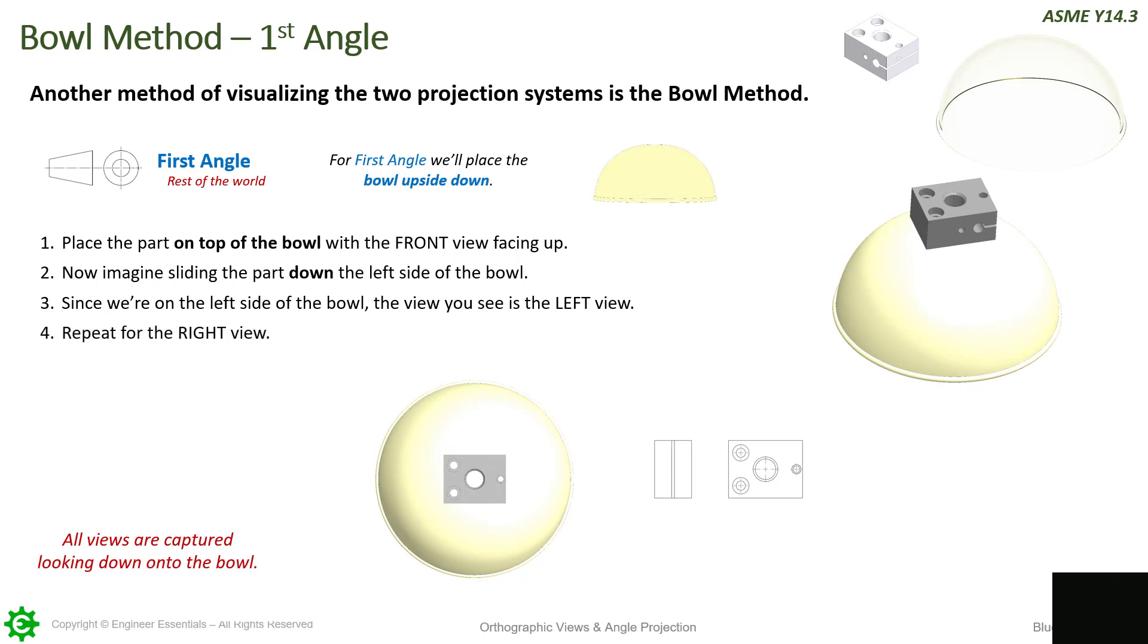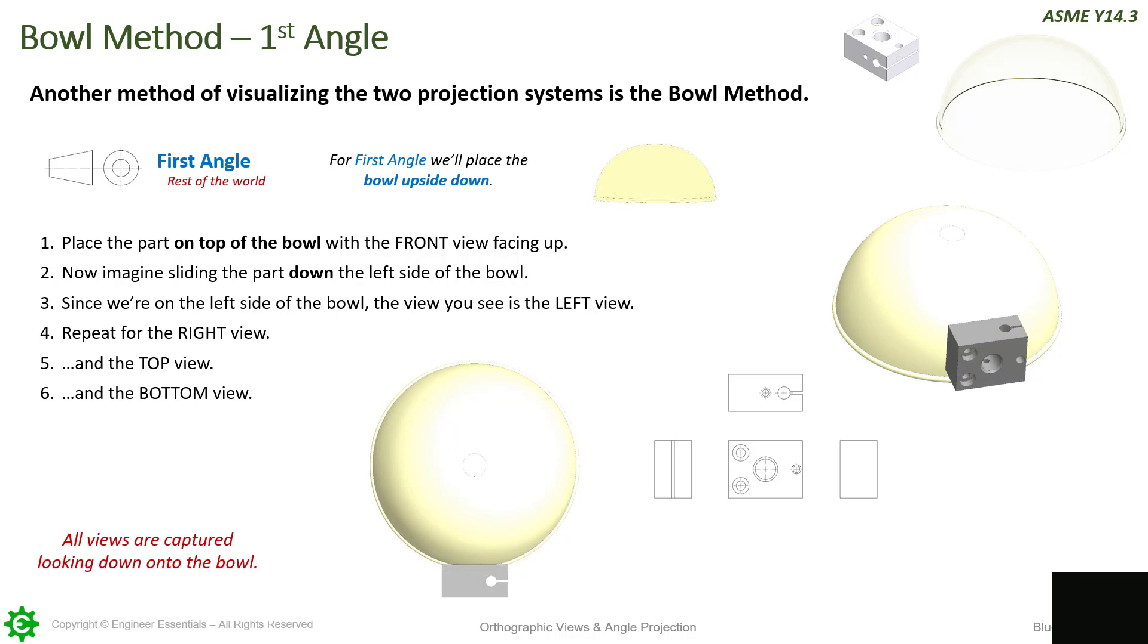Next, we do it for the other sides. So, here's the right view, which you can see would be right over here in our drawing. And we can do the same for the top view. Right here. And the bottom view. Right here. You can see, once again, that it gives you a good representation of what the 2D view would look like when you have a part, or you can take the 2D part and imagine what the 3D version would look like if you had it on this bowl. The other good thing about the bowl method is you can use it for both first angle and third angle, you just have to remember to flip over the bowl.